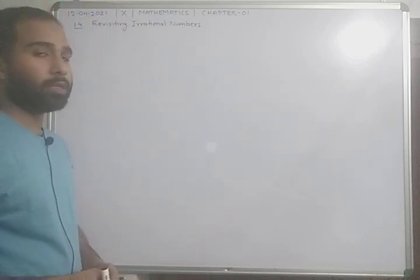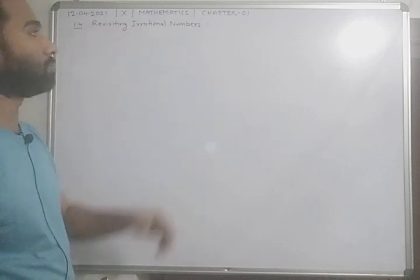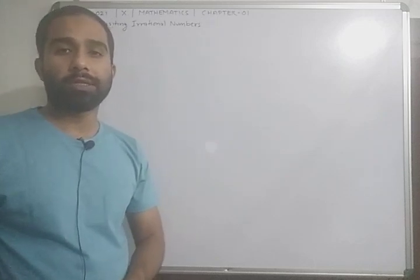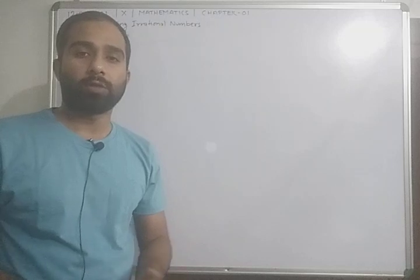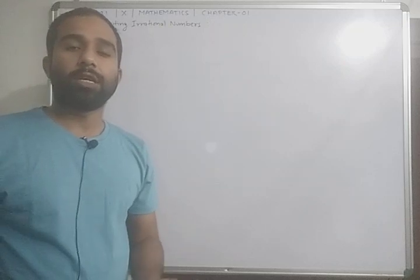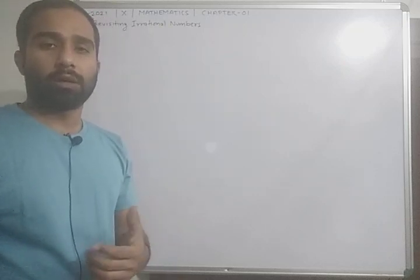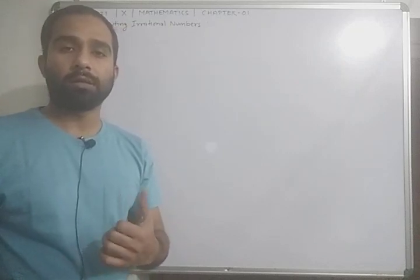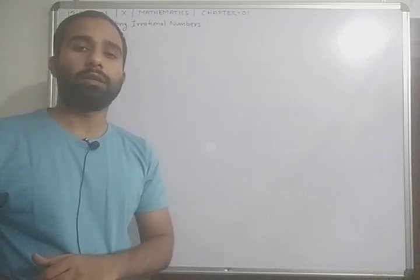Today we are going to start the topic: Revisiting Irrational Numbers. As in Class 9th, all of you have studied about irrational numbers. Those numbers which cannot be written in the form of P by Q are called irrational numbers. At the same time, numbers whose decimal expansion is non-terminating and non-repeating are also called irrational numbers.